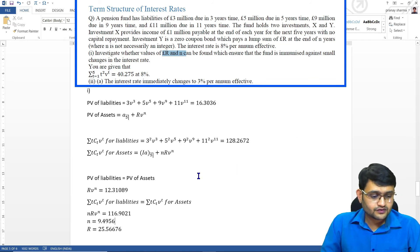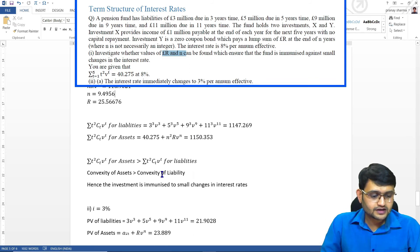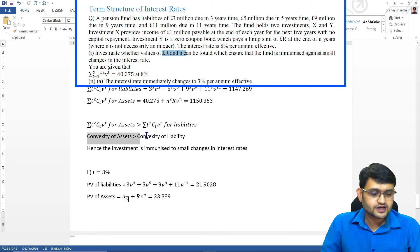Further, we will have to show that convexity of asset is greater than convexity of liability. Again, we can just show the numerators equal. For that I have substituted these values and because these are greater, convexity of asset is greater than convexity of liability. Hence, the investment is immunized for small changes of interest rate.